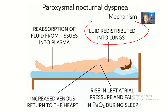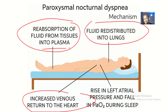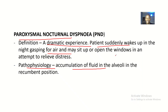Fluid is redistributed into the lungs. There is increased venous return to the heart, and there's reabsorption of fluid from tissues into the plasma. This fluid will then be redistributed into the lungs, occupying the space where the air is supposed to be — so you have difficulty breathing when you sleep.